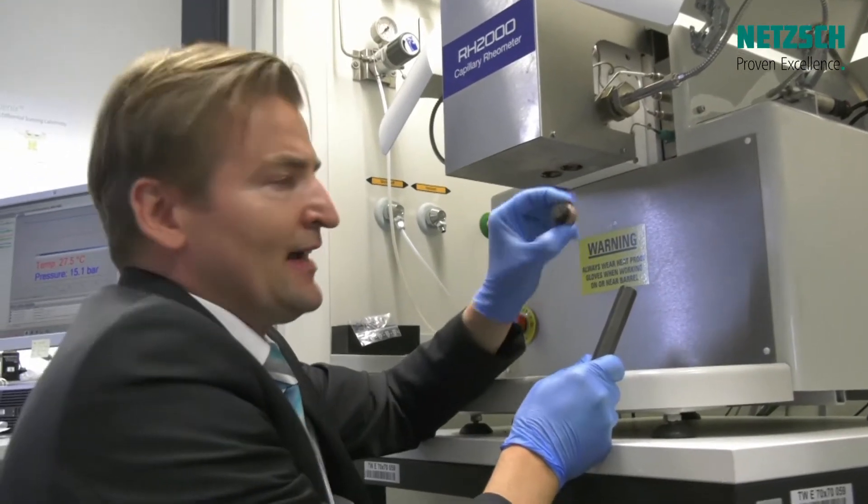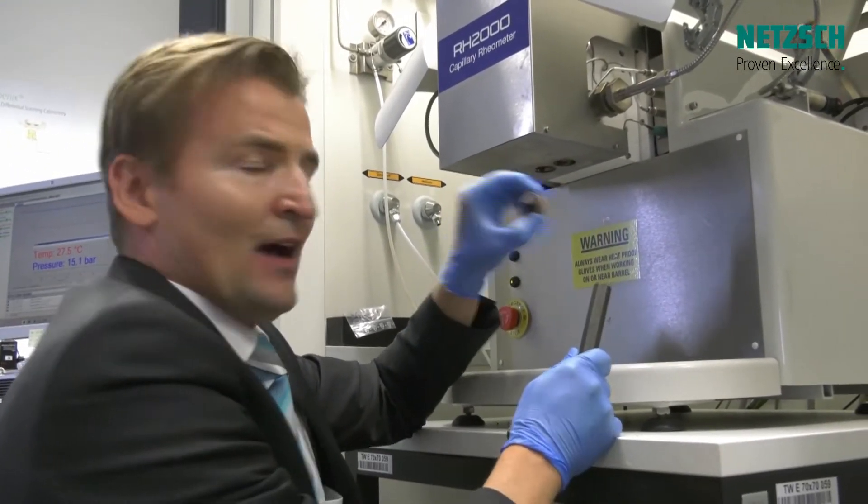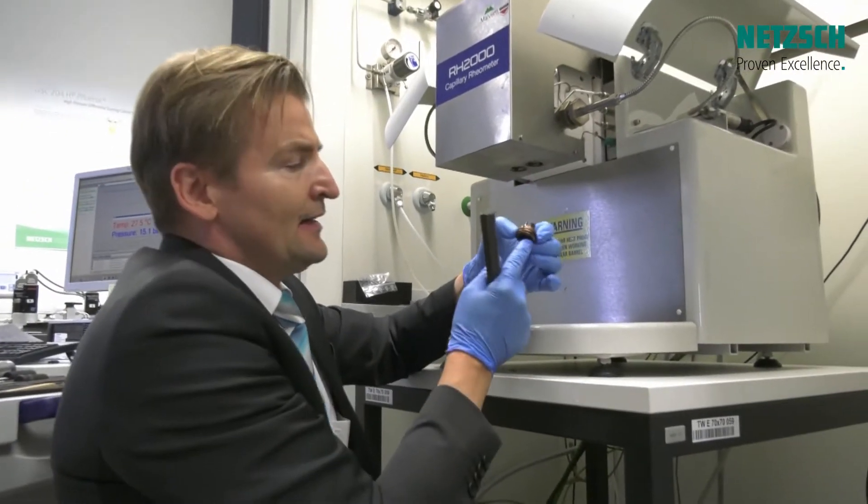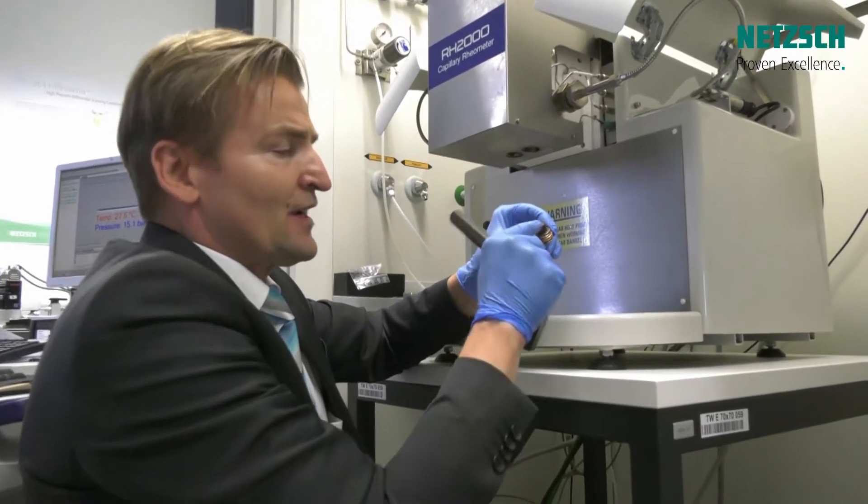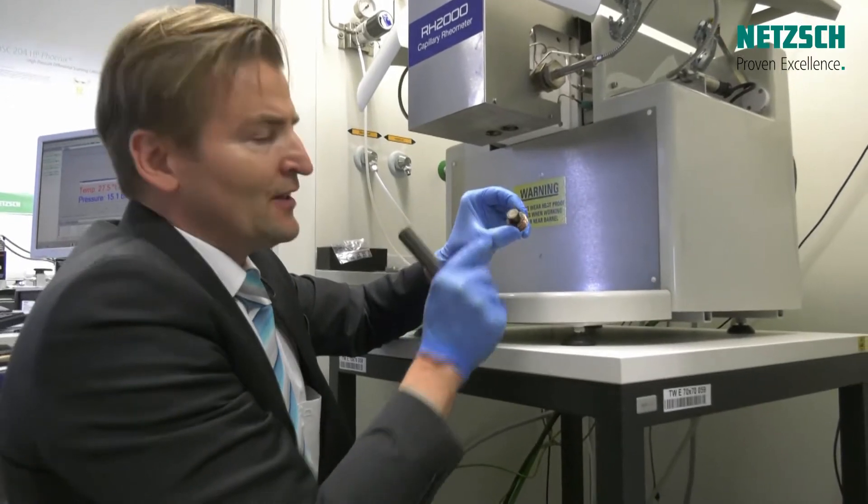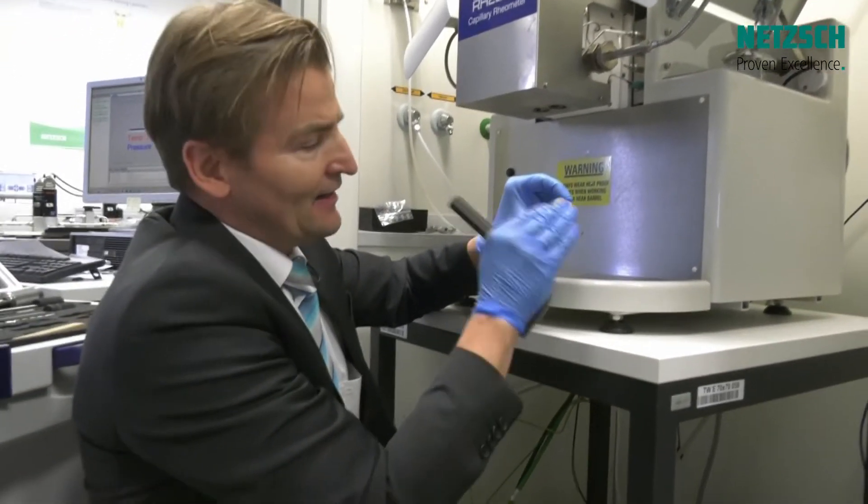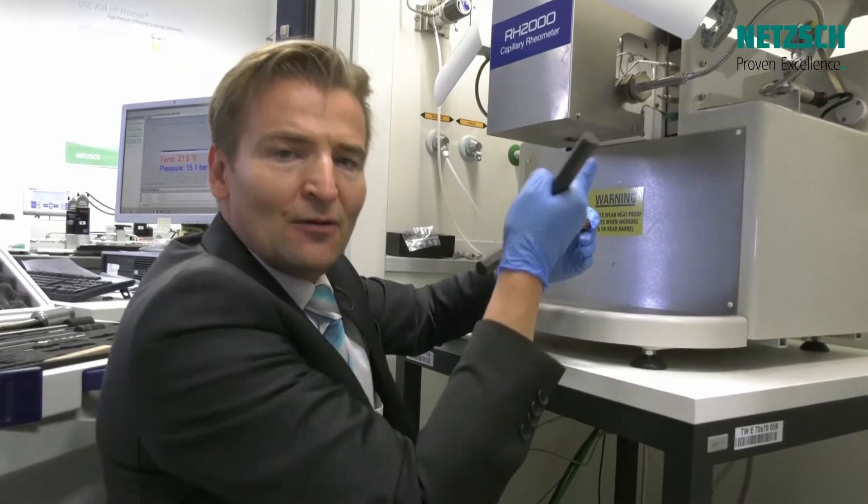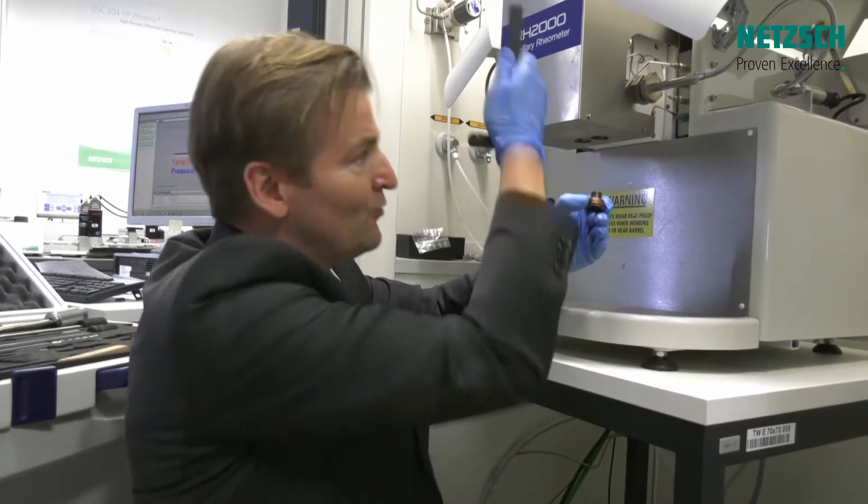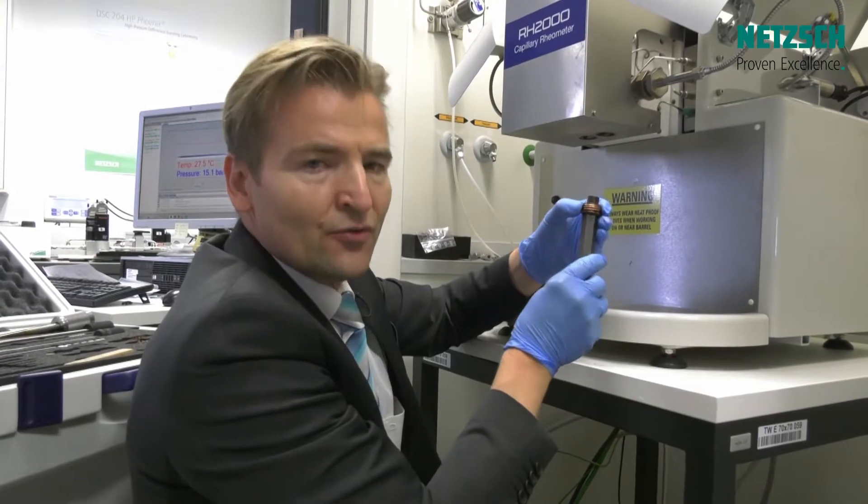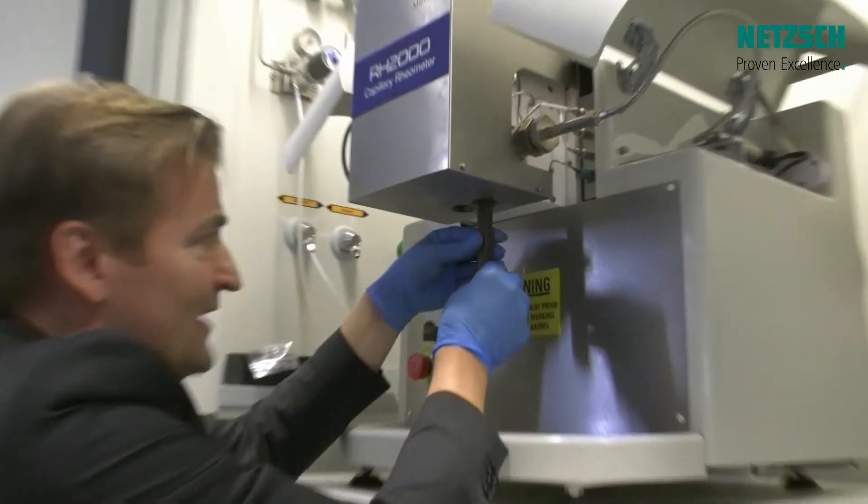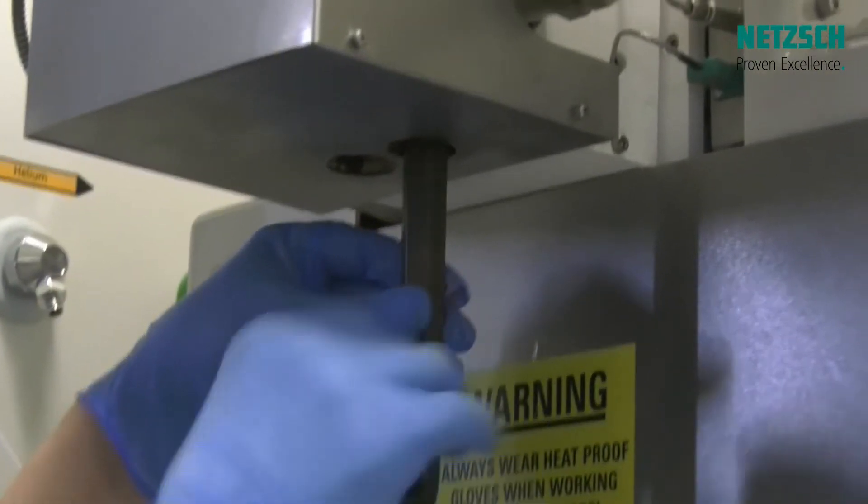There is another die which we set into the right barrel bore of the cylinder which is called the orifice. This is a pinhole with just a very short length but the same diameter and entry angle like the capillary die. This will measure our entrance pressure drop while we are pushing the sample through the dies. So I introduce now the orifice die into the right cylinder.